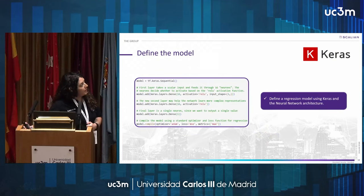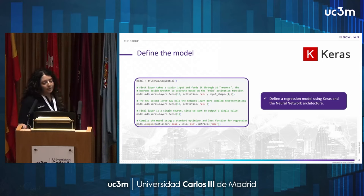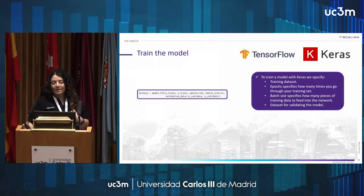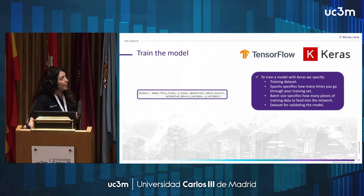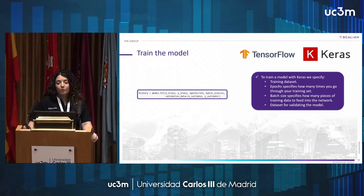Once the data has been collected, we can define the model architecture using Keras. The model architecture basically refers to the network shape, network size, and network configuration — for example, the optimization algorithm and the loss function for training the model. Once the model is defined, we can train it using Keras. To do so, we specify the training dataset, the number of epochs specifying how many times to iterate over the training set, the batch size specifying how many samples to put through the network at once, and finally the validation data for the model.